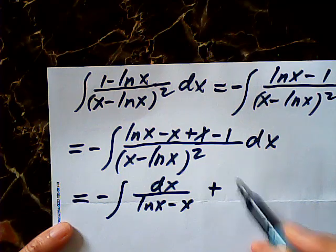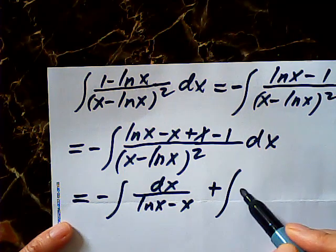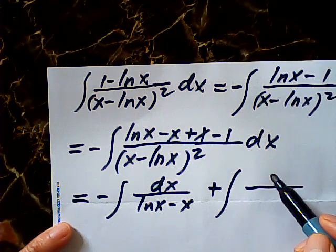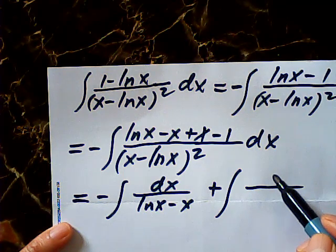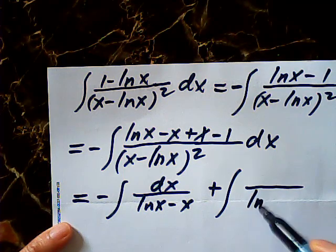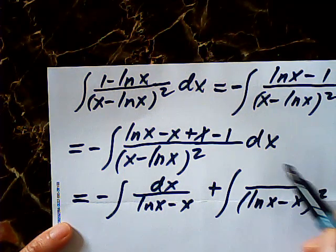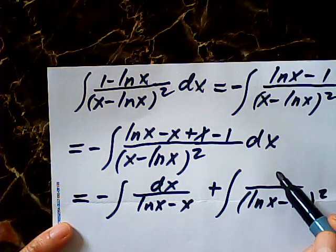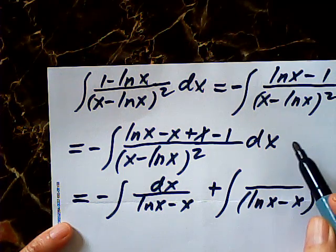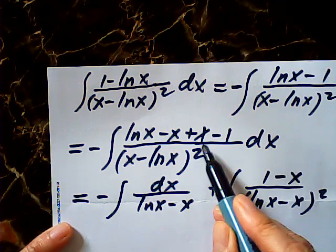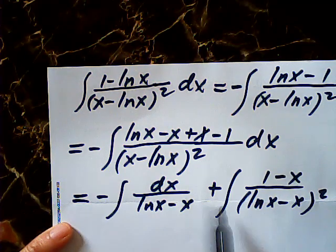And the other one becomes plus. Negative, negative, plus, over log x minus x square. This will be equal to 1 minus x. I change the sign; negative becomes plus.